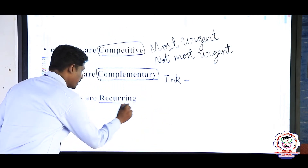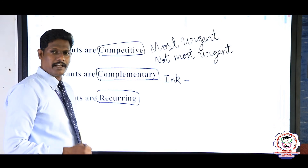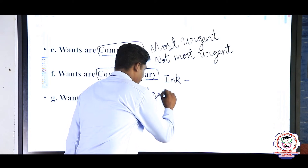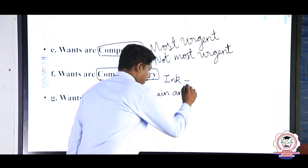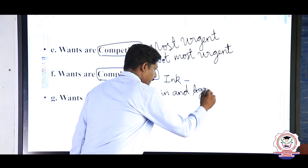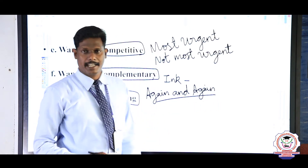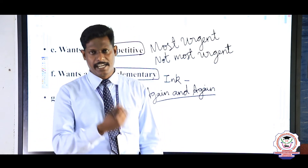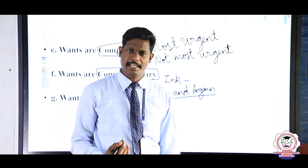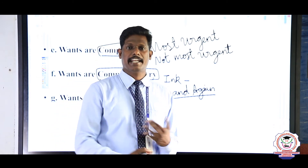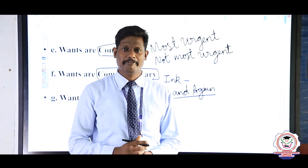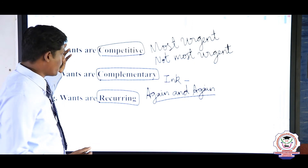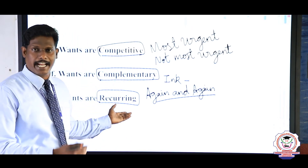Next: wants are recurring, meaning again and again. For example, I get hungry, I eat food — then again I get hungry, again I eat food. This repeats again and again, which is called recurring. I am not satisfied with eating just one time. These are the characteristics of wants: competitive, complementary, and recurring.